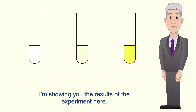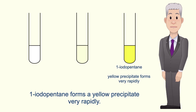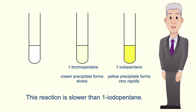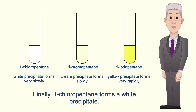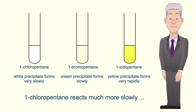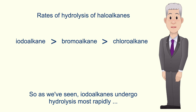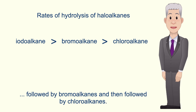Here are the results of the experiment. 1-iodopentane forms a yellow precipitate very rapidly. Next, 1-bromopentane forms a cream precipitate — this reaction is slower than 1-iodopentane. Finally, 1-chloropentane forms a white precipitate and reacts much more slowly than either 1-iodopentane or 1-bromopentane. So iodoalkanes undergo hydrolysis most rapidly, followed by bromoalkanes and then chloroalkanes.